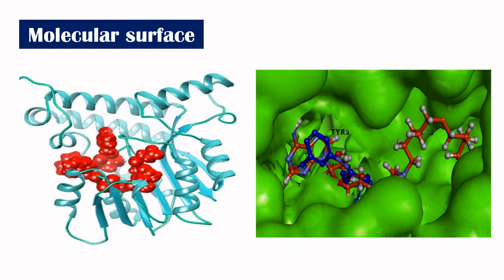The representation here is the surface representation, solid surface representation. You can easily identify this ligand and how it is interacting with the protein. And in this picture on the right hand side, I have changed the representation of the protein to surface representation — this is known as solid surface — and the ligands are represented in the form of ball and stick representation. These help in understanding the interactions. Generally in the interactions between a drug and a protein or a small molecule and a protein, the major part is played by non-covalent interactions.